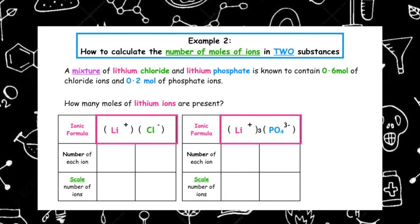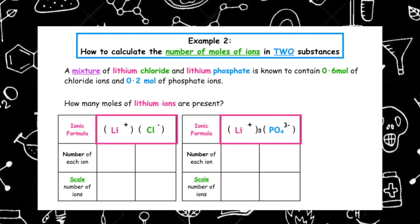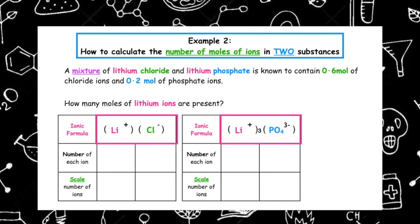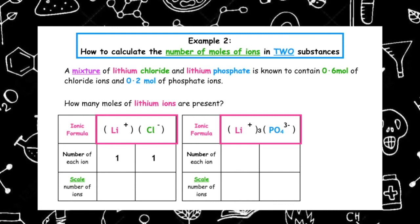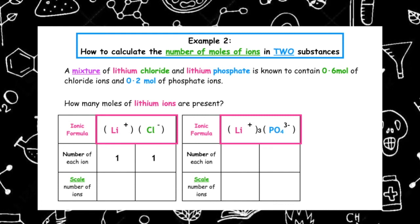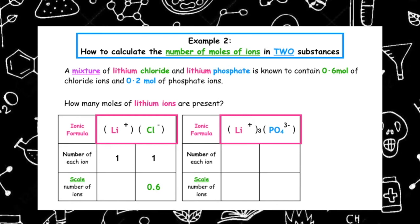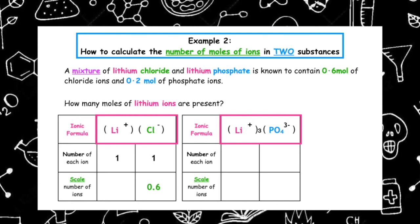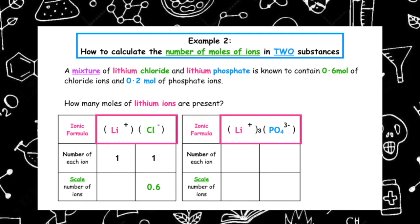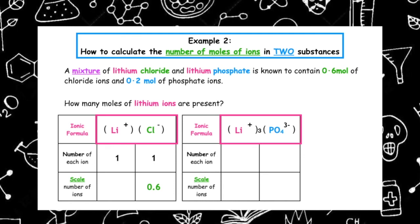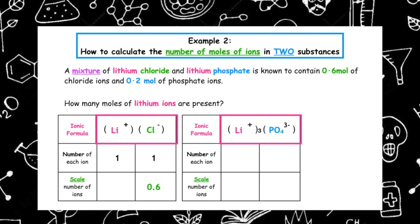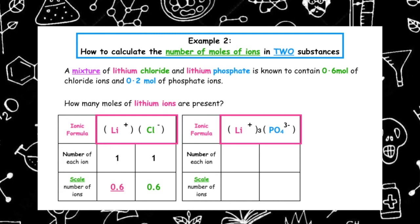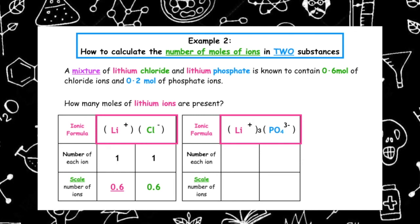We add up the total number of each ion. Starting with lithium chloride, the ratio of positive to negative ions is 1 to 1. In the question we have been given 0.6 moles of chloride ions, so we place that under the 1 for chloride and scale: 1 times 0.6 divided by 1 gives us 0.6 moles of lithium ions in lithium chloride.